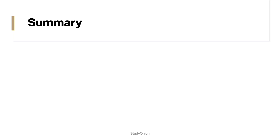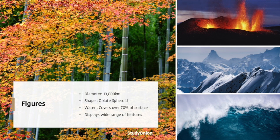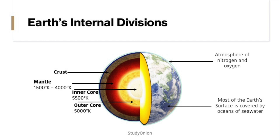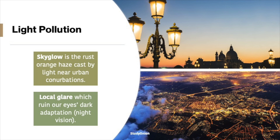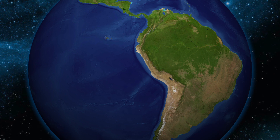To quickly summarise: the Earth has a diameter of 13,000 kilometres and the shape of an oblate spheroid. Water covers over 70% of the Earth's surface. The Earth's internal divisions consist of the crust, mantle, inner core, and outer core, and it has an atmosphere of nitrogen and oxygen. The benefits of the atmosphere include oxygen to breathe, absorbing most UV and X-ray radiation, regulating temperature, and protecting us from most meteoroids. The drawbacks include scattering, adverse seeing conditions, transmission issues, and weather. There are also two types of light pollution: sky glow and local glare. Hopefully that helped you learn more about GCSE astronomy — specifically planet Earth. See you next time!